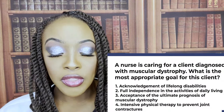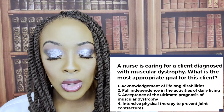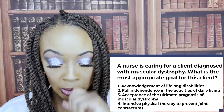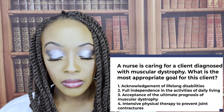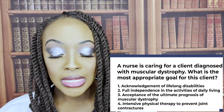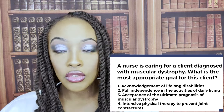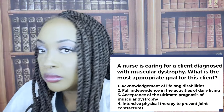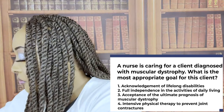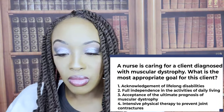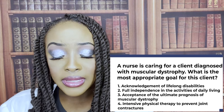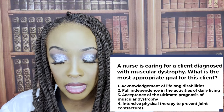A nurse is caring for a client diagnosed with muscular dystrophy. What is the most appropriate goal for this client? One: acknowledgement of lifelong disabilities. Two: full independence in activities of daily living. Three: acceptance of the ultimate prognosis of muscular dystrophy. Four: intensive physical therapy to prevent joint contractures. The correct answer is three — acceptance of the ultimate prognosis of muscular dystrophy.